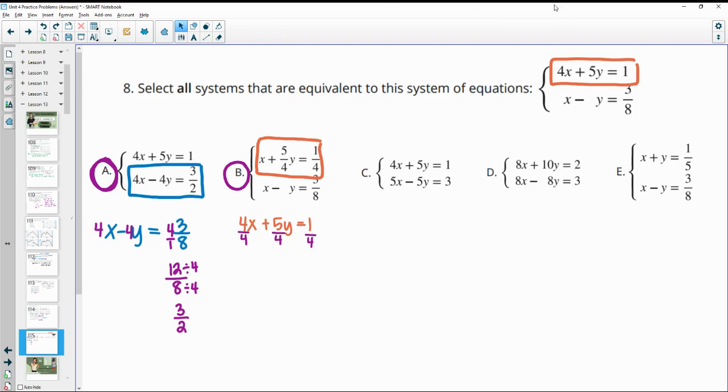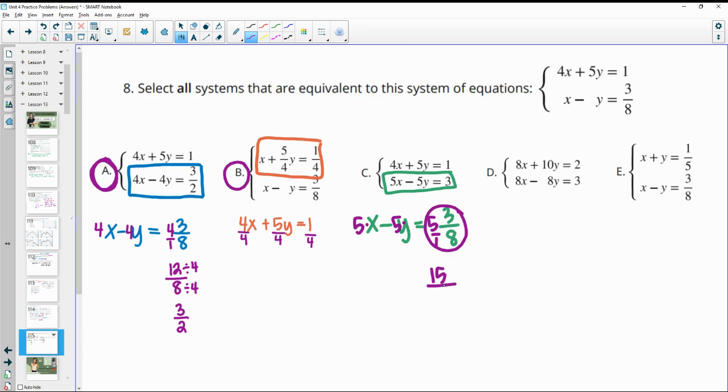Part C, so they kept the first equation the same, 4x plus 5y equals 1. So that second equation is different. So we want to see, did they manipulate the second equation correctly from here? So x minus y equals 3/8. So here we can see that they went from x to 5x, which meant that they multiplied by 5. So they would have had to have done that to everything, which gives us the 5x and the 5y we wanted. So we just got to check that this equals 3. So this is 5 over 1, so that's going to be 5 times 3 is 15, 8 times 1 is 8, and that does not equal 3. So this is not an equivalent system.